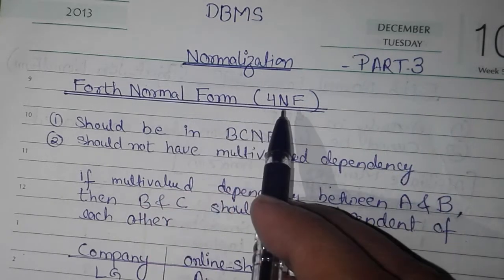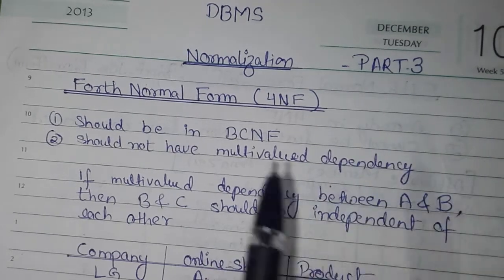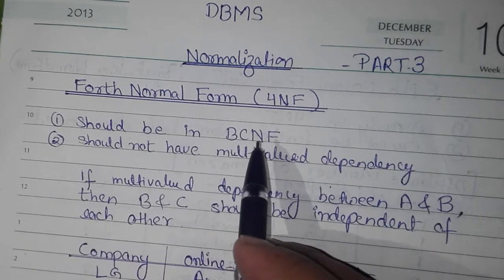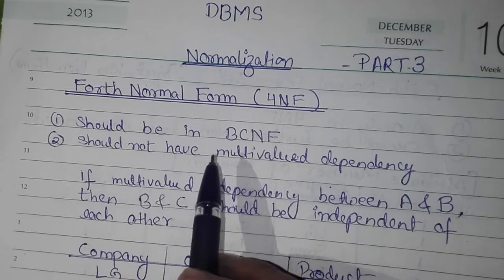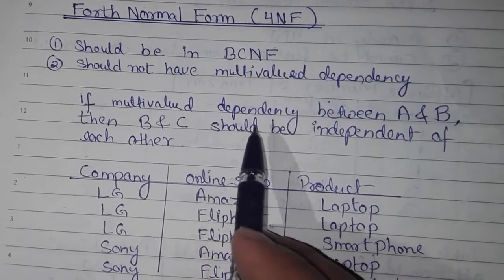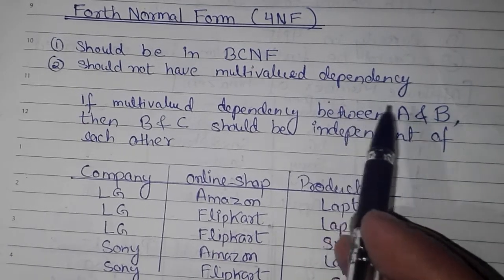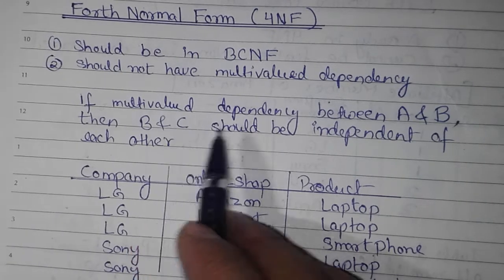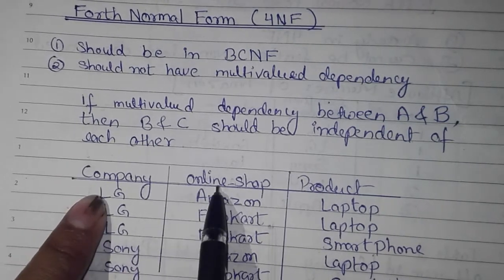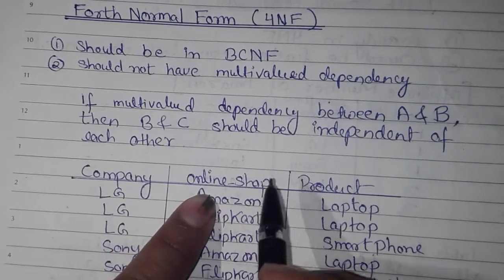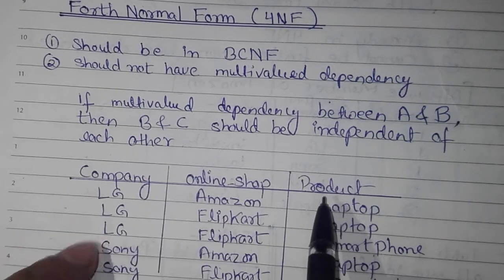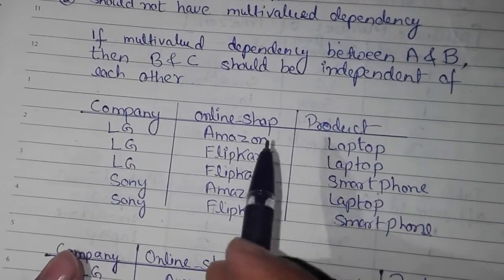Fourth Normal Form, also called 4NF, has two rules. First, it should be in BCNF — Boyce-Codd Normal Form. Second, there should not be any multi-value dependency. If there is a multi-value dependency between column A and column B, then columns B and C should be independent of each other. I will explain this with an example of an online shopping portal.